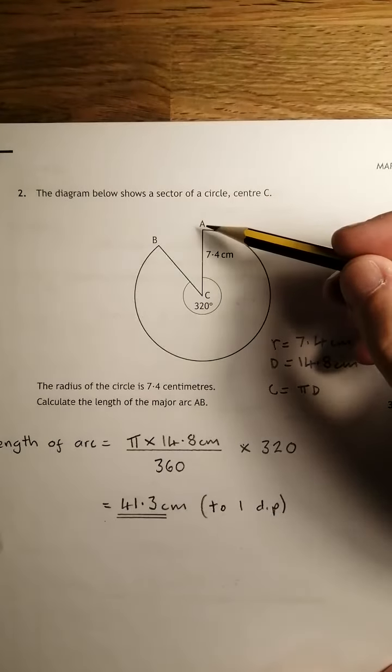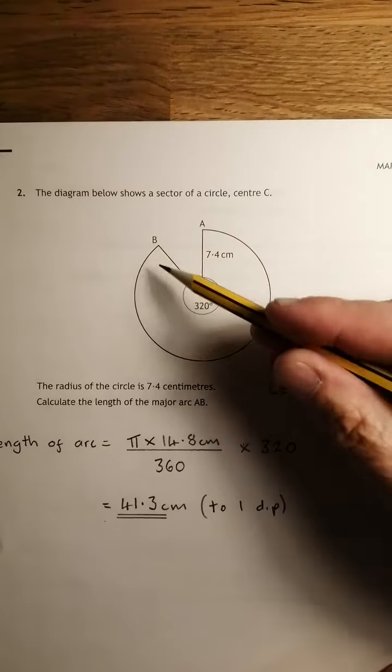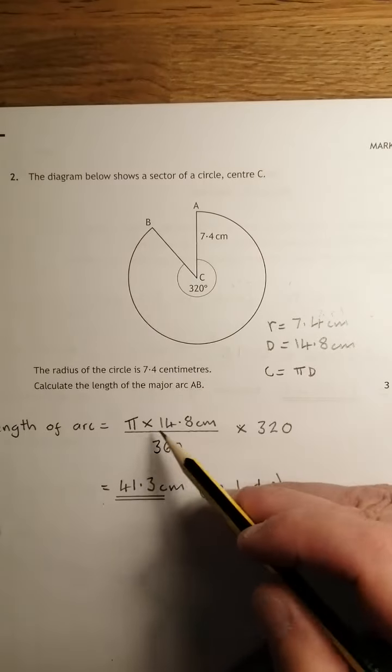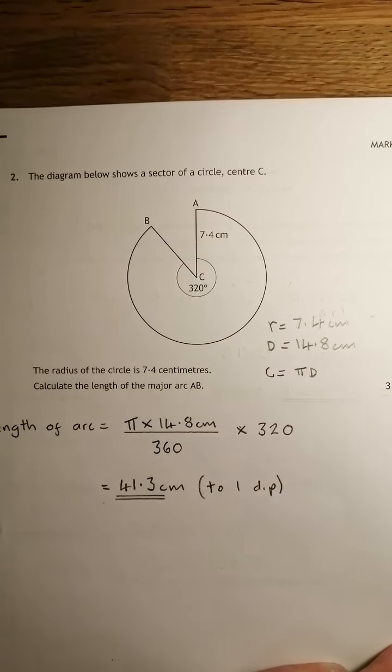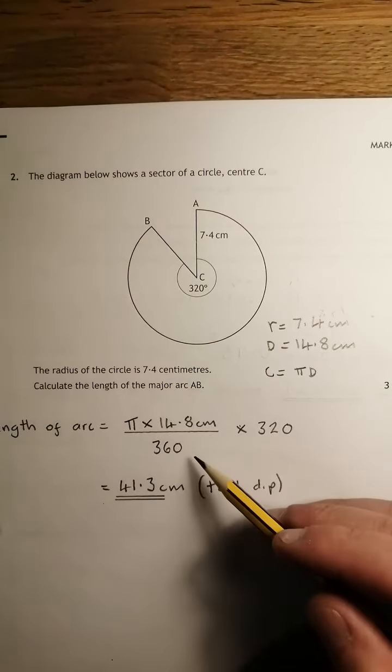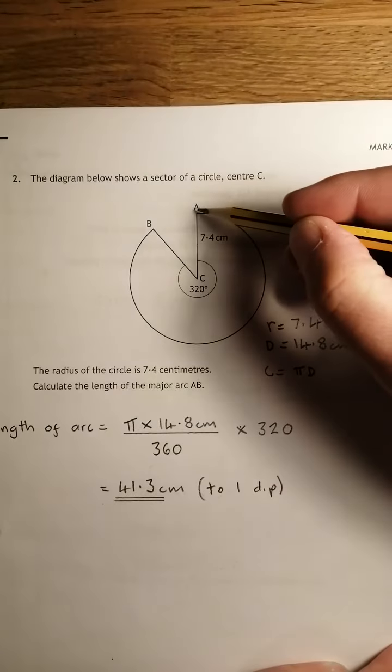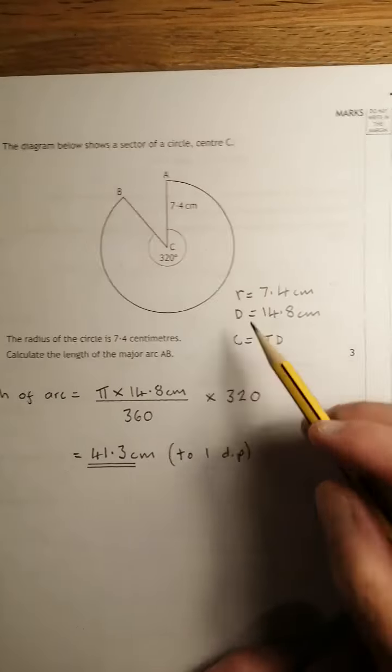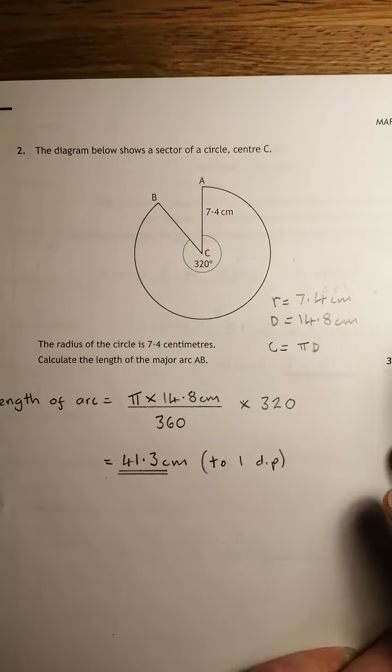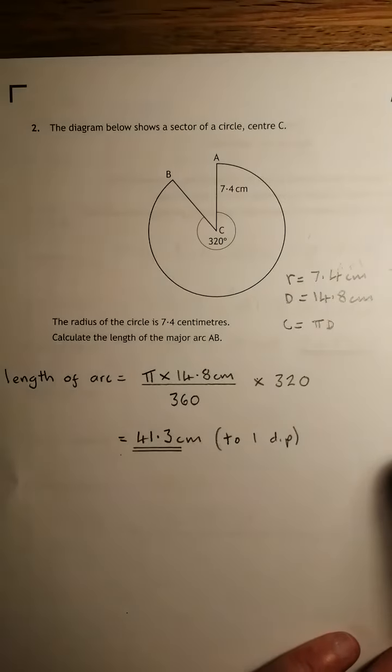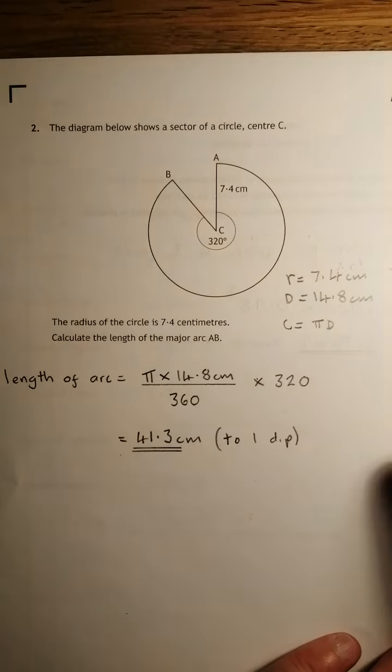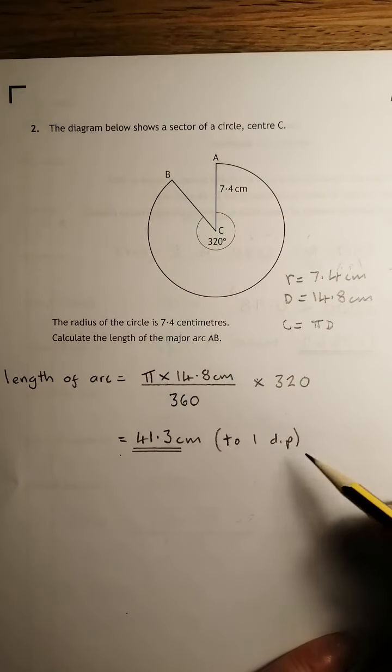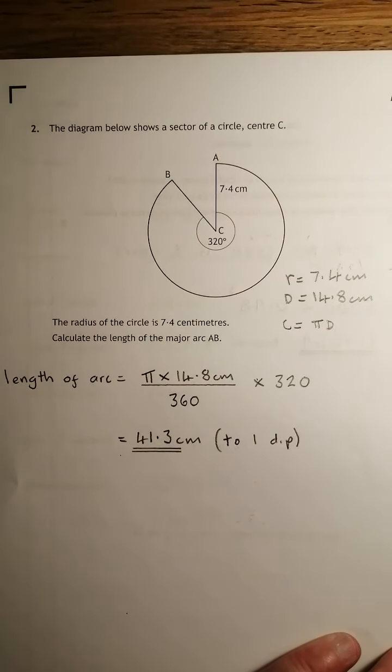So the arc is clearly part of the circumference, so to get the length of this arc, you get the circumference, pi times d, pi times 14.8, divided by 360 to get the length of arc opposite 1 degree, and then multiply it by 320, because it's 320 degrees. Stick that into your calculator, and you get 41.3 centimetres, and I've written that off to one decimal place.